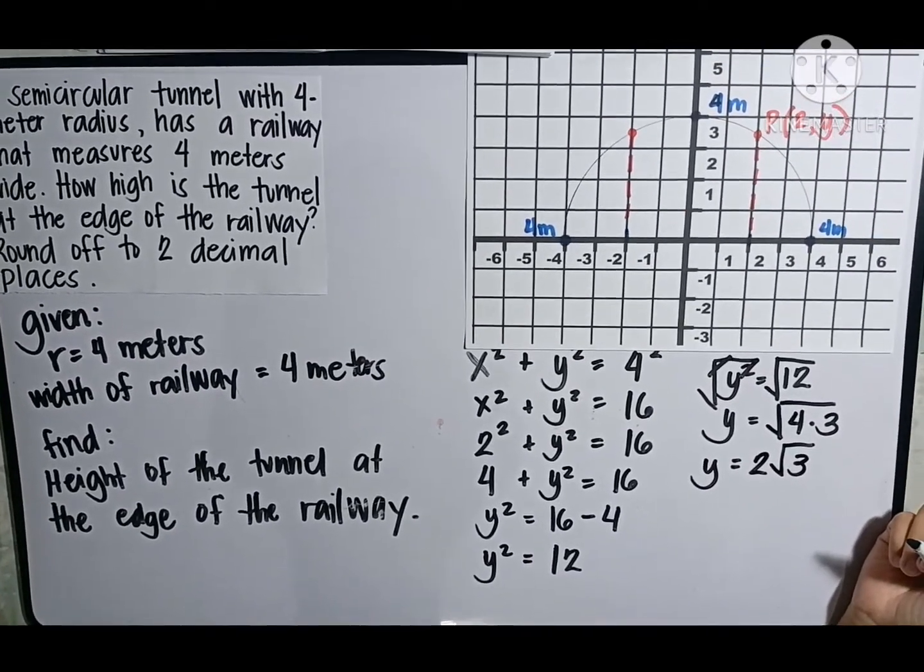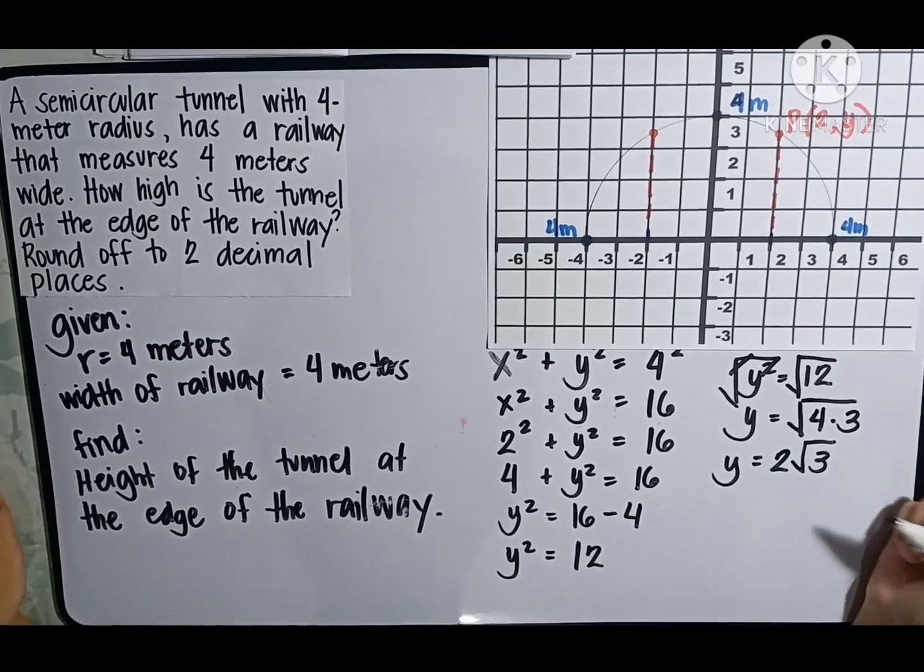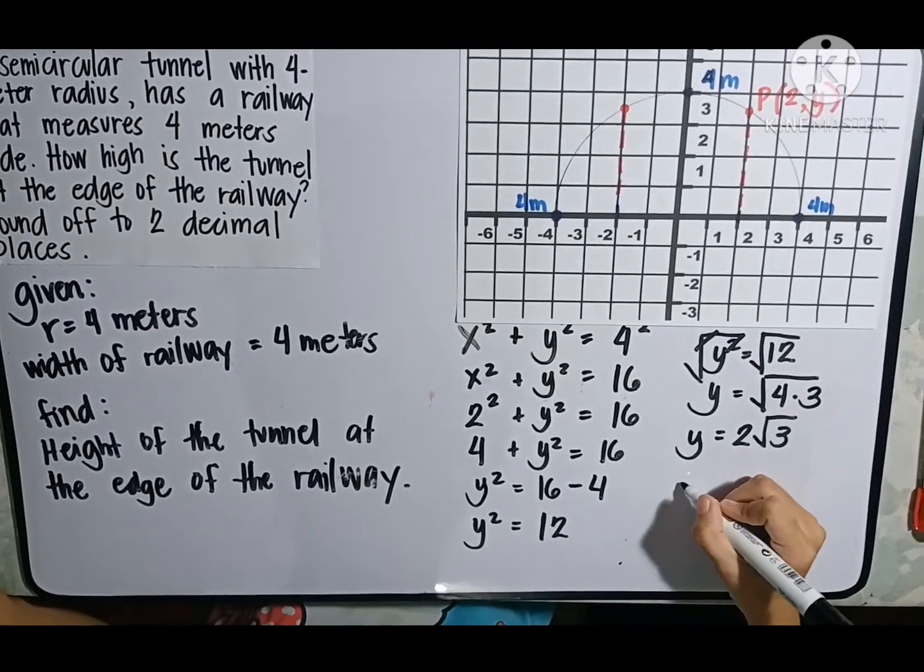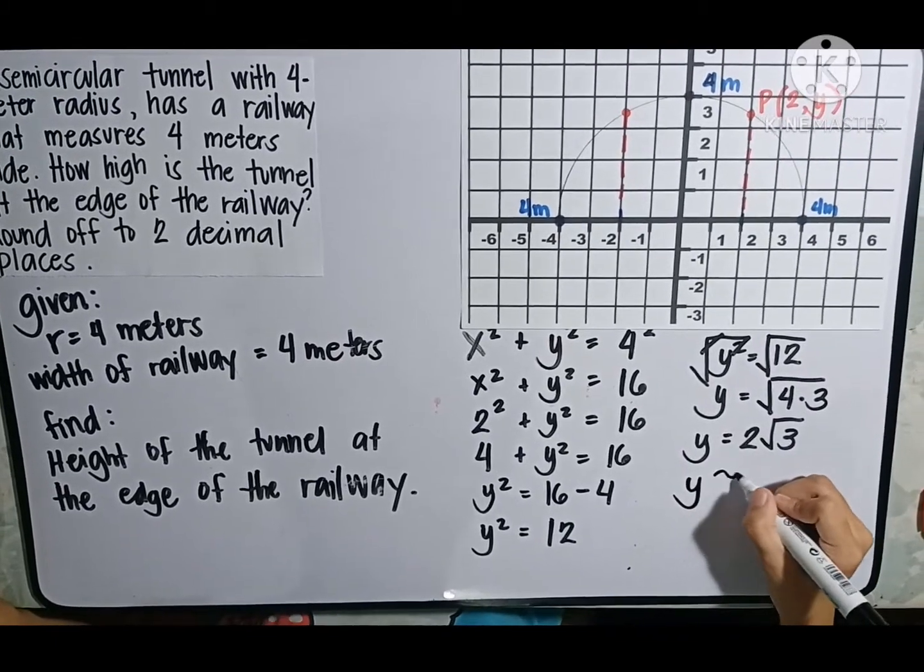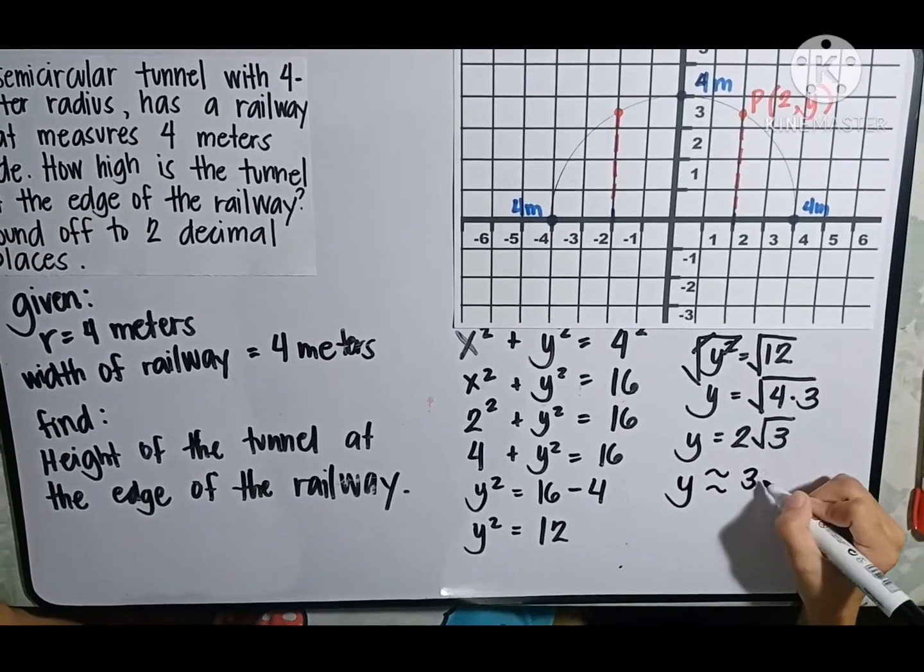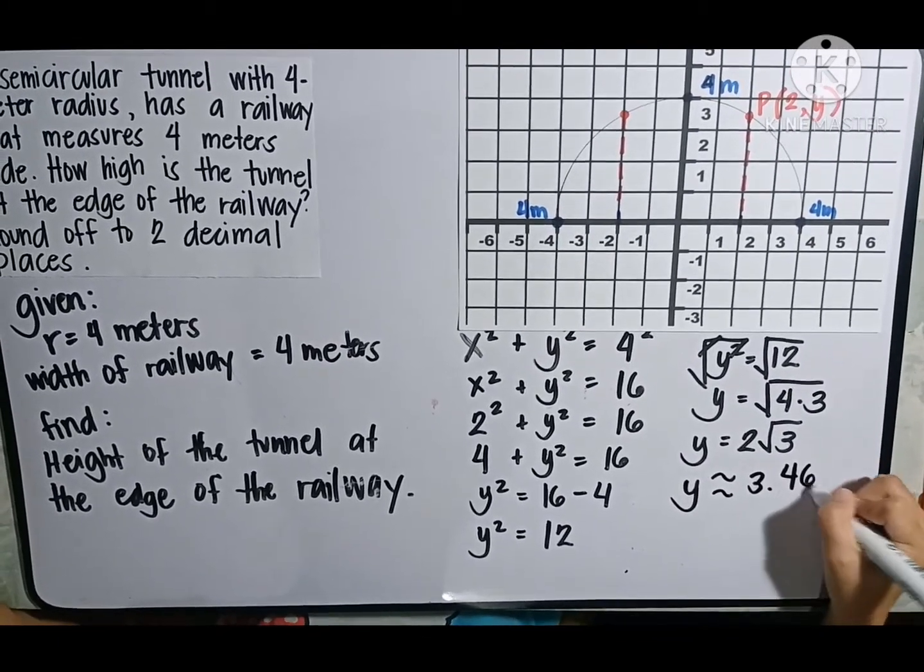But, it says in the problem that round off to two decimal places. So, y is approximately 3.46 meters.